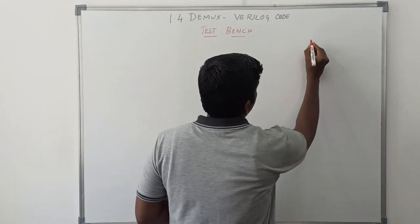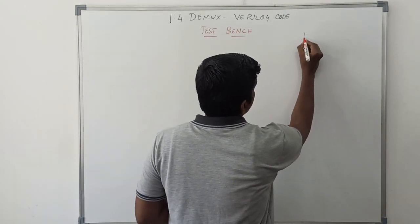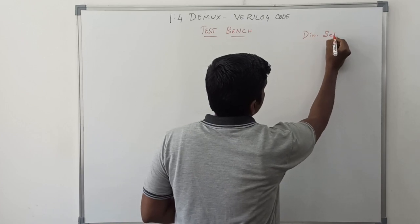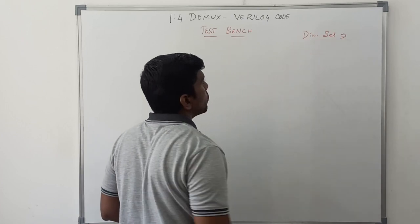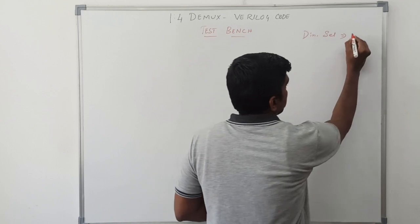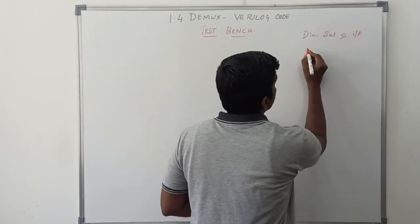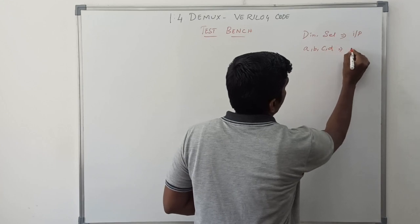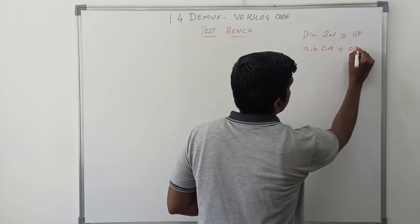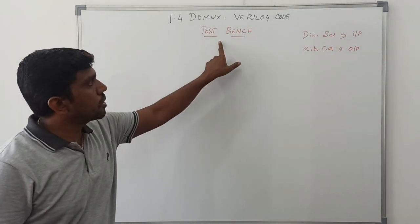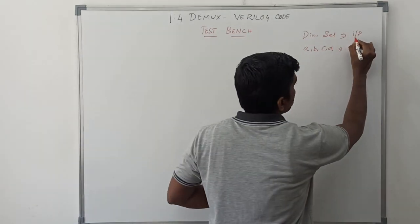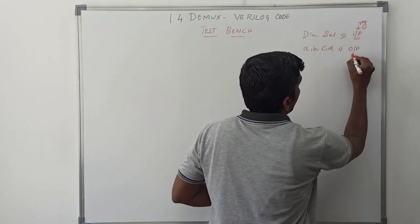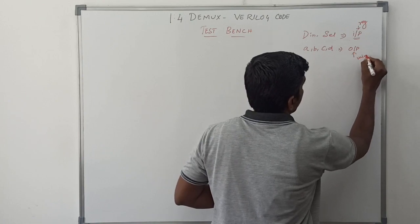In this 1-to-4 demux, we have two inputs: D_in and the selection line. These two variables are considered as input variables. Then A, B, C, D are the output variables. In testbench Verilog HDL code, the input variable is declared as a register and the output variable is declared as wire.